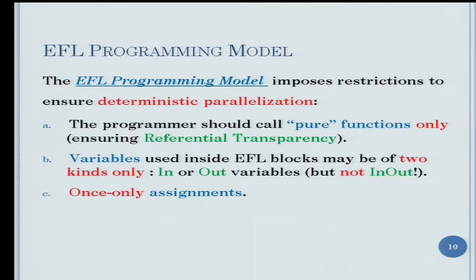What are the principles of the EFL programming model to ensure deterministic parallelization? First, the programmer should call pure functions — functions that don't have side effects — ensuring the functional programming concept of referential transparency. Variables used inside EFL blocks may be of two kinds only: in or out, but not both in and out. Variables that we can read only from, or write only to, but not both.